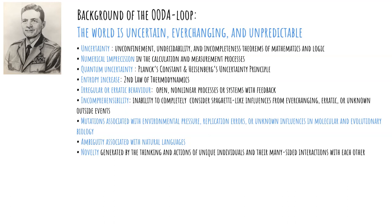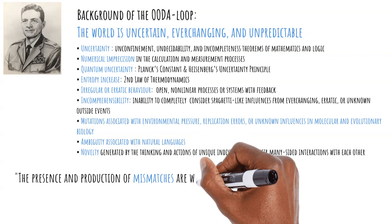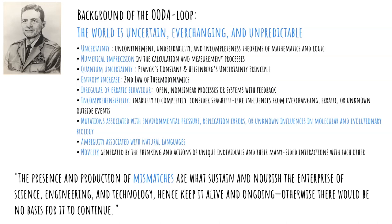Ambiguity associated with natural languages — think, for example, about the difference between American English and English English in the use of the verb 'to table something.' Novelty generated by the thinking and actions of unique individuals and their many-sided interactions with each other, like, for example, the internet or social media. This uncertainty assures that we will never be perfect in our understanding, and that the world will always generate mismatches. These mismatches are central to the OODA loop.